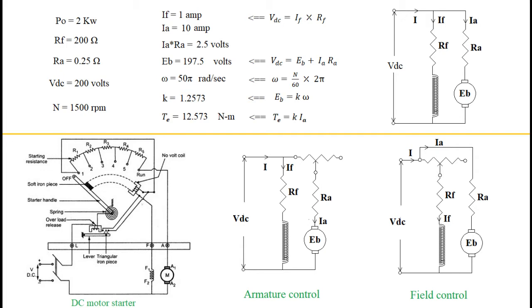For this analysis, we will select a 2 kW motor with field resistance of 200 ohms and armature resistance of 0.25 ohms. The specified supply voltage is 200 volts and full load speed is 1500 rpm.